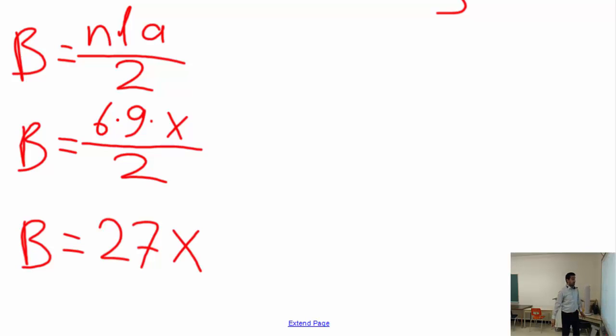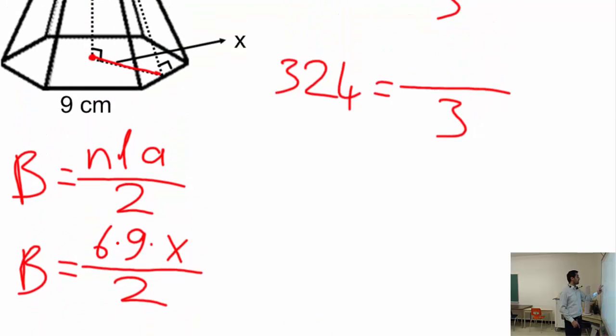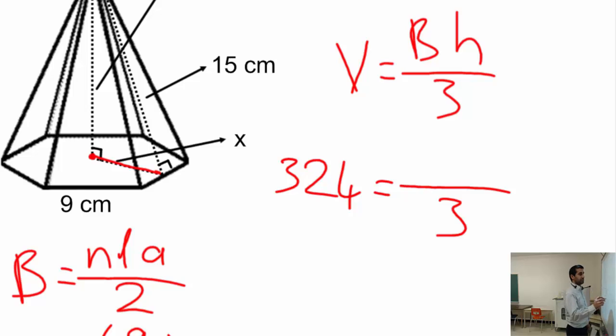That's what the base area is. Because we don't know the apothem, we cannot completely calculate that. 27x now represents the base area for this pyramid. That's what I'm going to write down here - instead of base area, I'm going to write down 27x. That's the capital B.